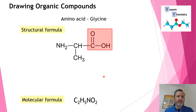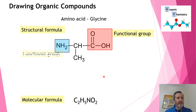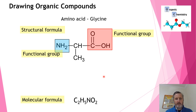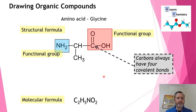Here we notice two specific functional groups: a carboxylic acid functional group and an amine functional group. Functional groups are the specific parts of an organic molecule that give it special properties. In the case of an amino acid, they allow amino acids to make peptide bonds with other amino acids and form proteins that are essential for the growth and running of our bodies. One thing to always check when drawing organic compounds is that every single carbon has four lines or four bonds coming off it.